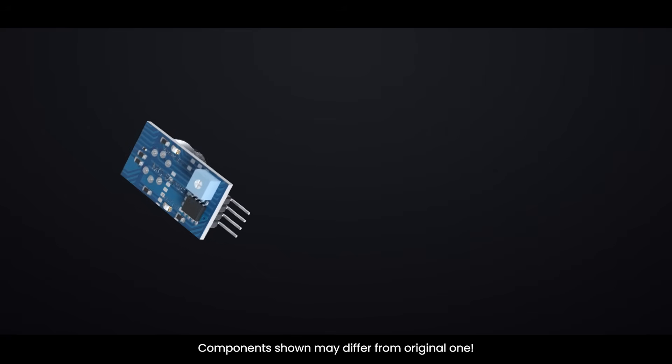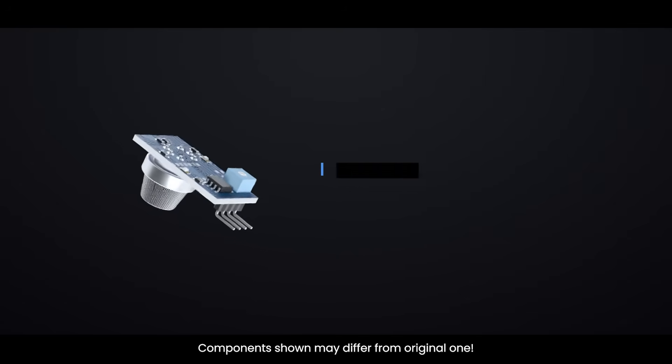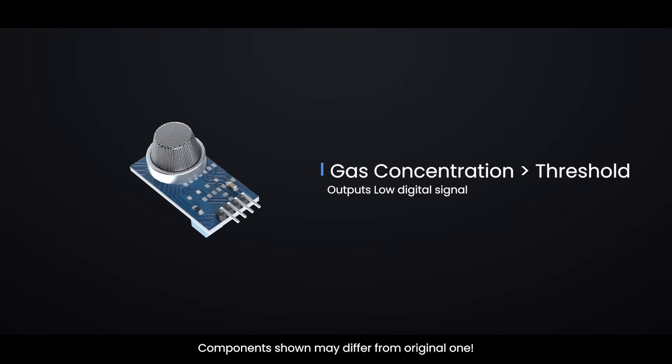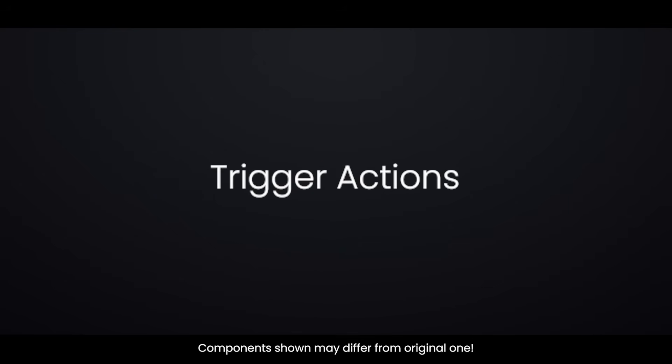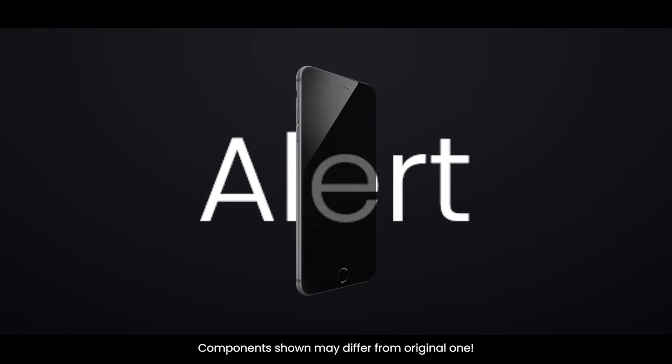This analog signal also goes to the LM393 comparator, which compares it to a reference voltage set by a potentiometer on the module. When the gas concentration rises above your set level, the comparator outputs a low digital signal at the digital pin, DO. When the gas concentration stays below your set level, it outputs a high digital signal instead. You can use this digital output to trigger actions, like sounding an alarm or sending an alert to your phone.